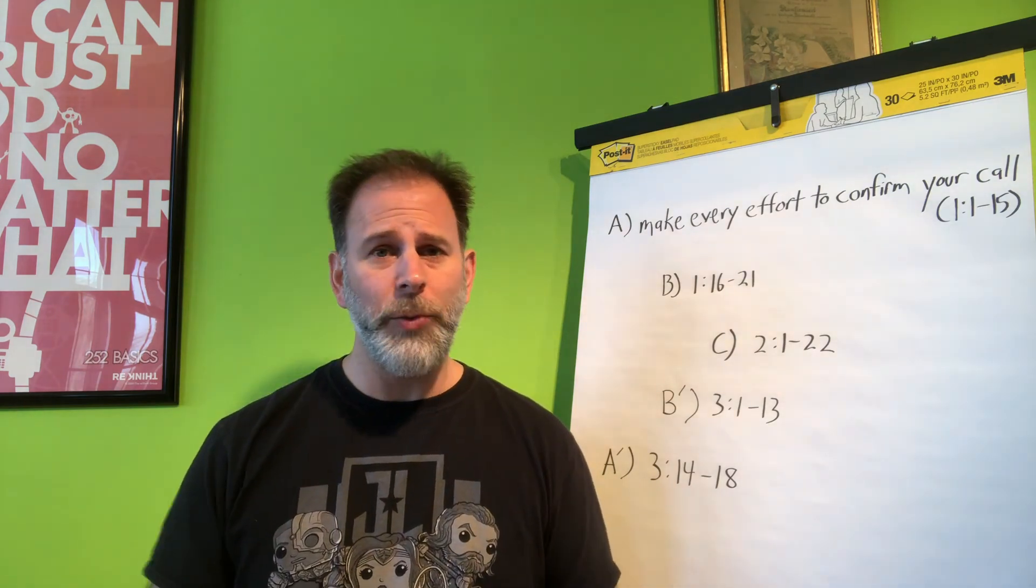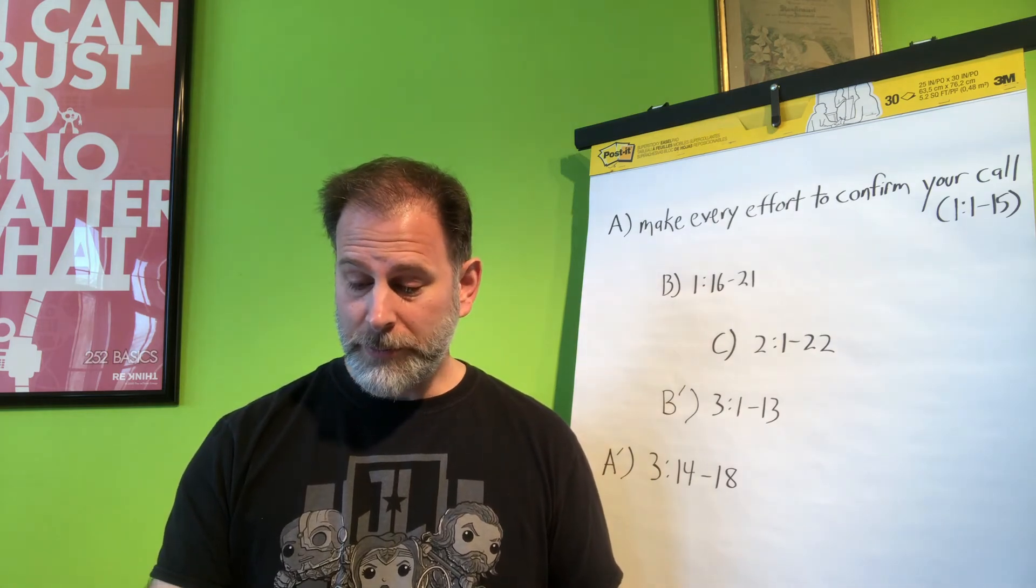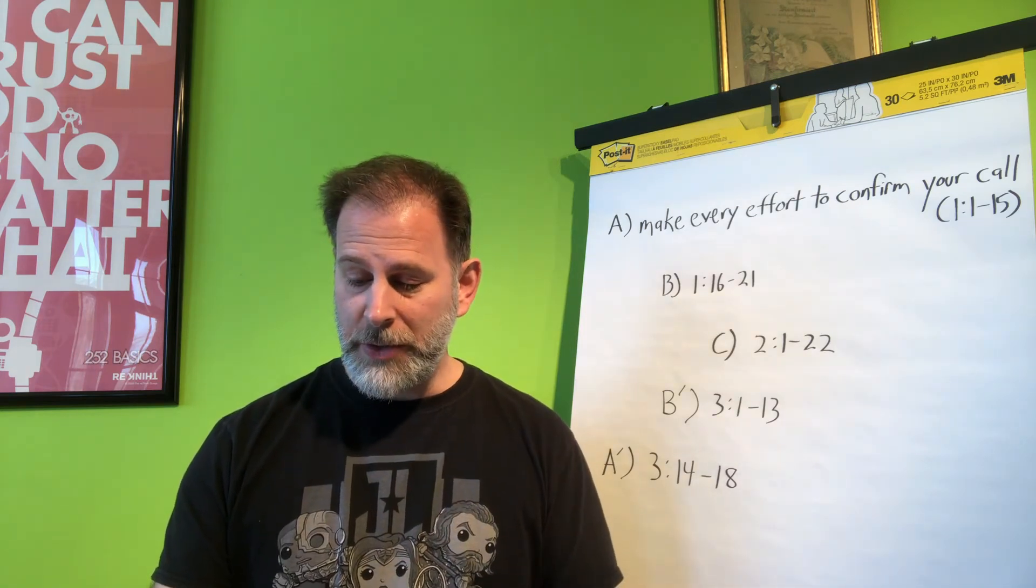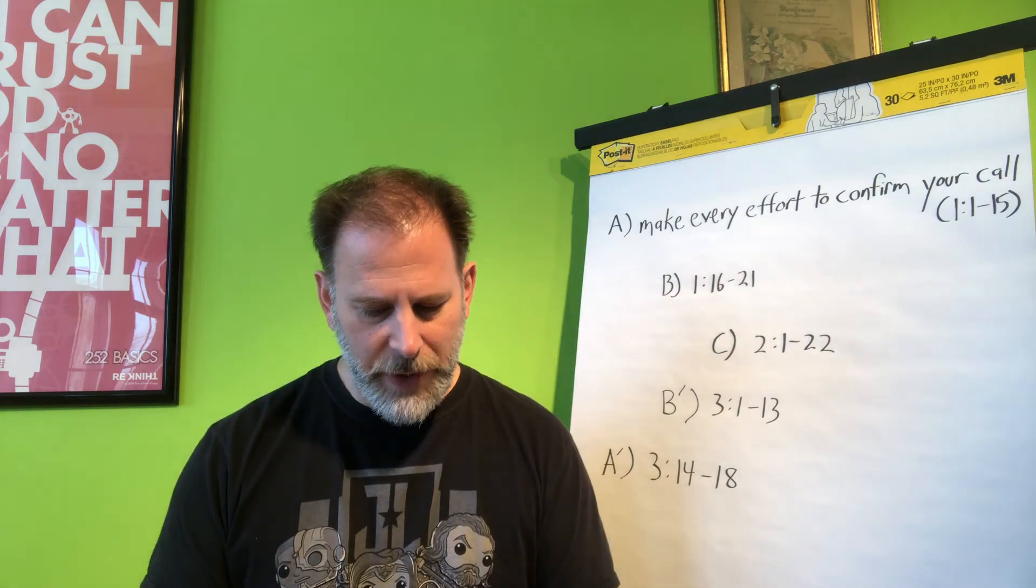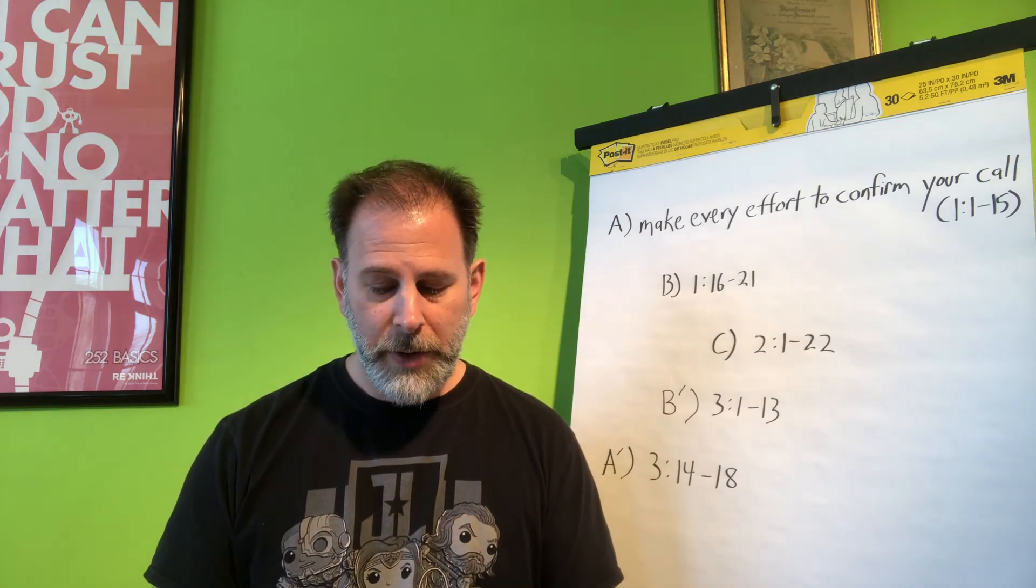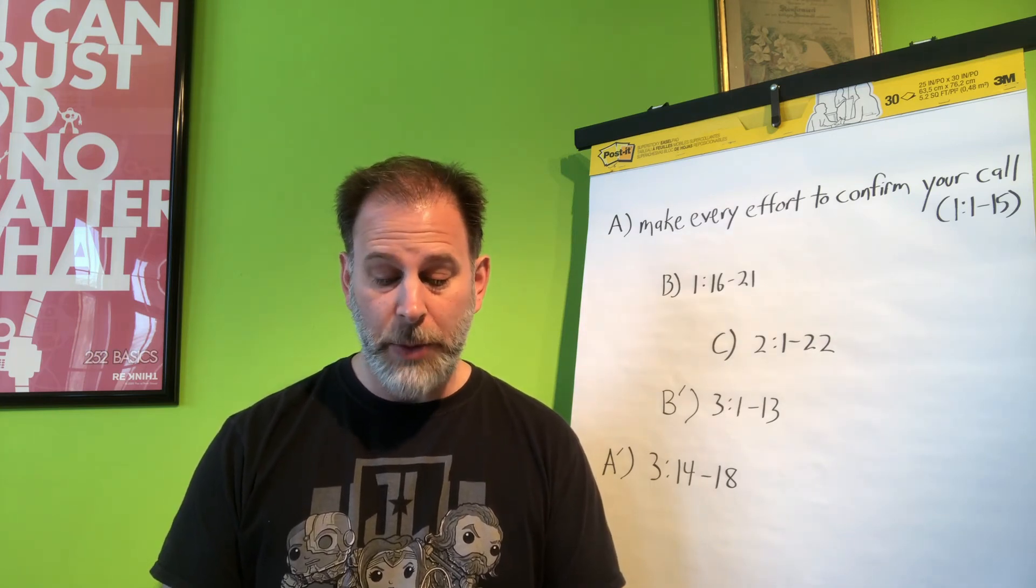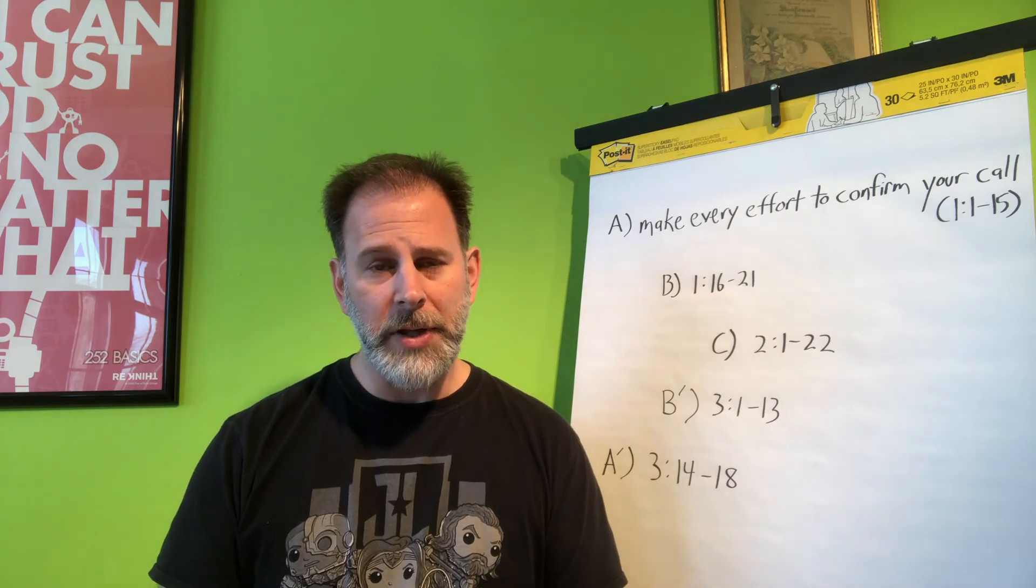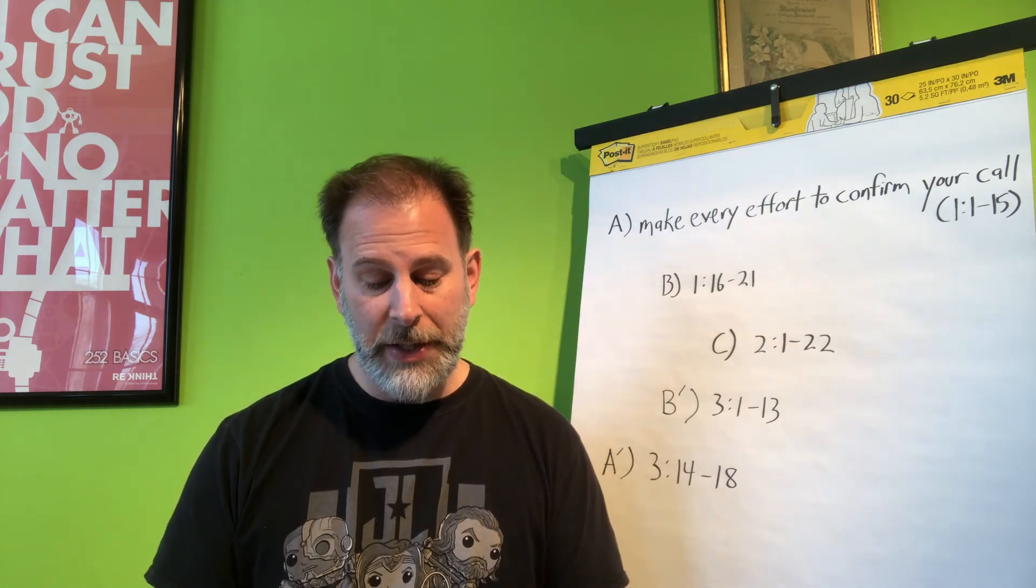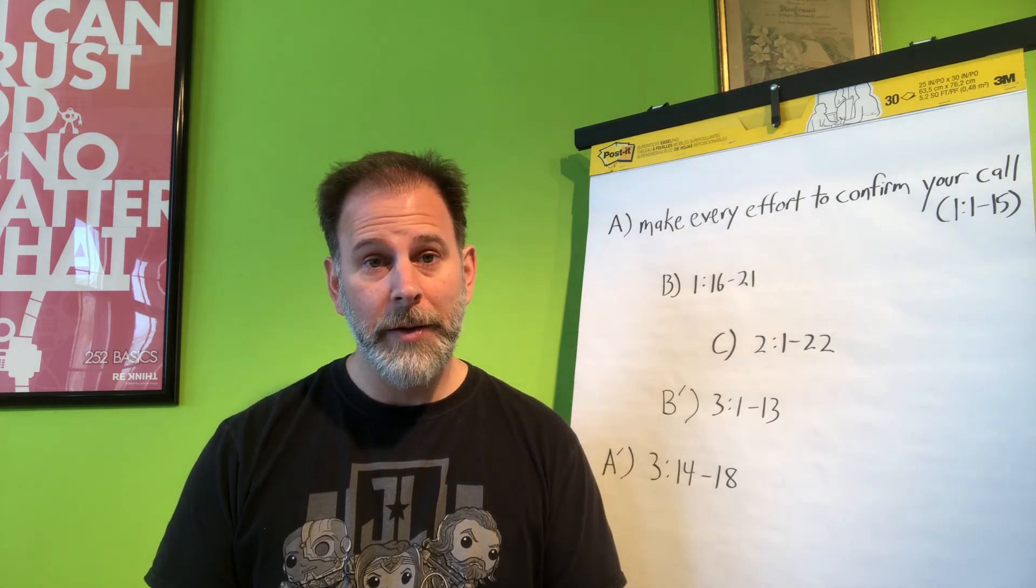And he says, Because I know that I will soon put it aside as our Lord Jesus Christ has made clear to me. And thanks to the Gospel of John, we have a very specific reference in Scripture of when Peter was told by Jesus that he was going to die. So at the very end of John's Gospel, chapter 21, this is right after Jesus asks Peter three times, Do you love me? Right after that, Jesus says, Very truly I tell you, when you were younger, you dressed yourself and went where you wanted. But when you are old, you will stretch out your hands and someone else will dress you and lead you where you do not want to go. And then the author adds this editorial insert. Jesus said this to indicate the kind of death by which Peter would glorify God. And then Jesus said to him, Follow me.